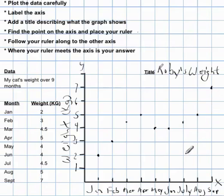Okay, so now, what we do is, let's just check, make sure we've done everything so far. We've plotted the data, yep, we've done that. We've labeled the axis, we've labeled it with what we're measuring and the unit of measure. We've added a title describing what the graph shows, Ruby's weight. We've done that. We've found the point on the axis. We haven't used a ruler. Luckily, we had lined paper, so we didn't need it. So we've done these two.